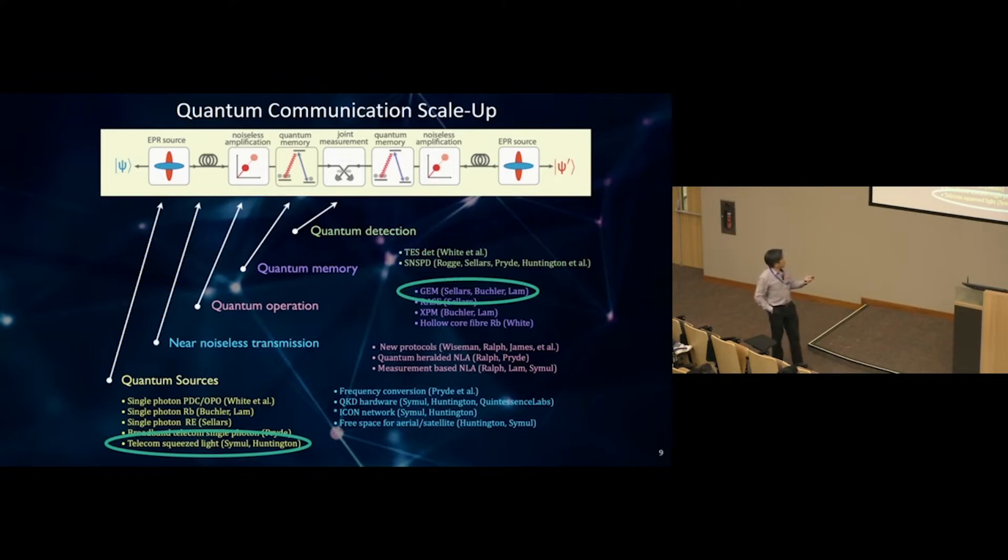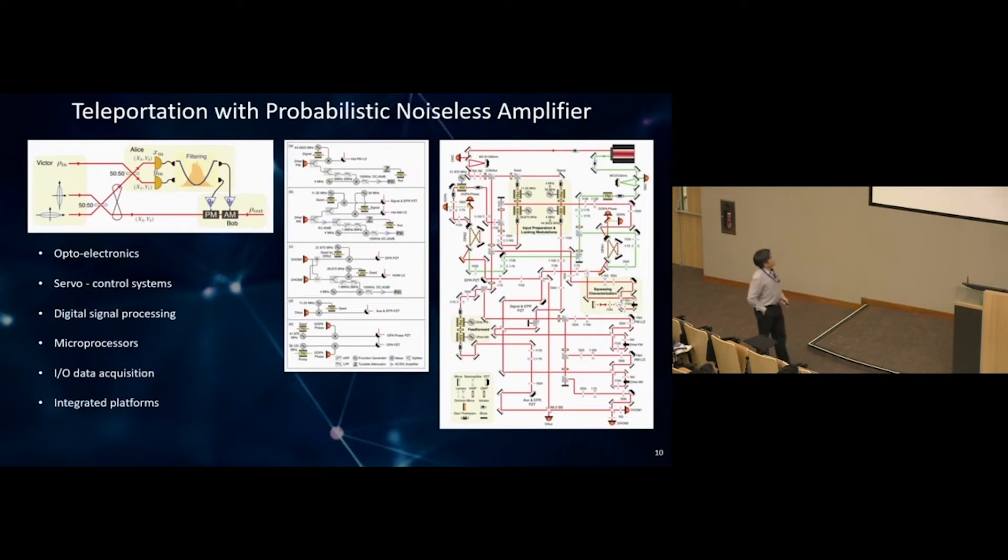For this talk, I'm going to concentrate on one type of quantum memory and one type of quantum source. It's good to note that Professor Matt Sellers from ANU has another form of quantum memory in rare earth systems where quantum coherence can stay for six hours and could extend to one day, which is really promising for ground-to-satellite communication.